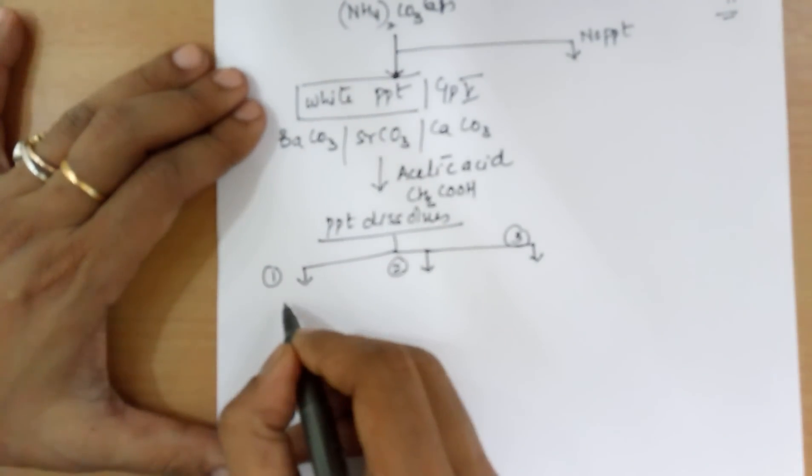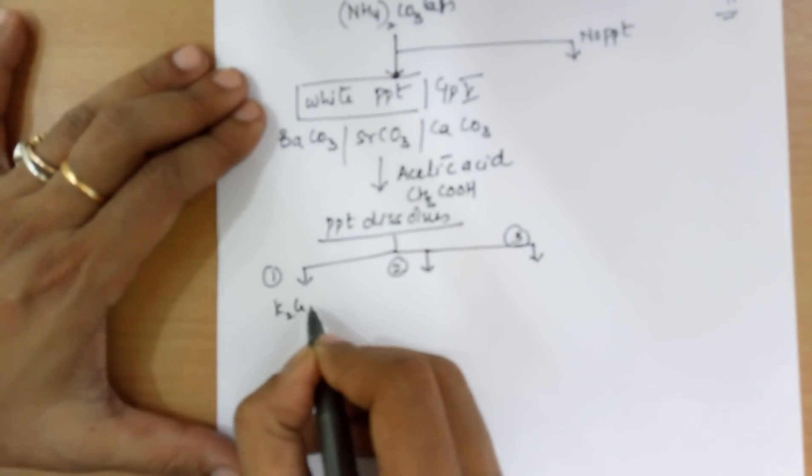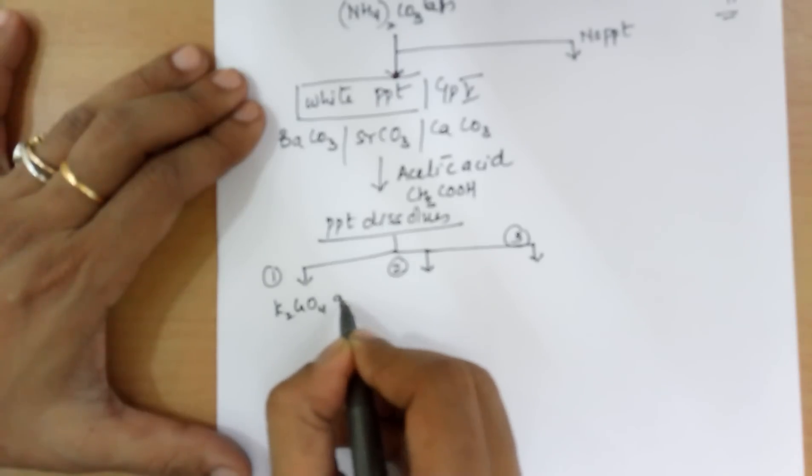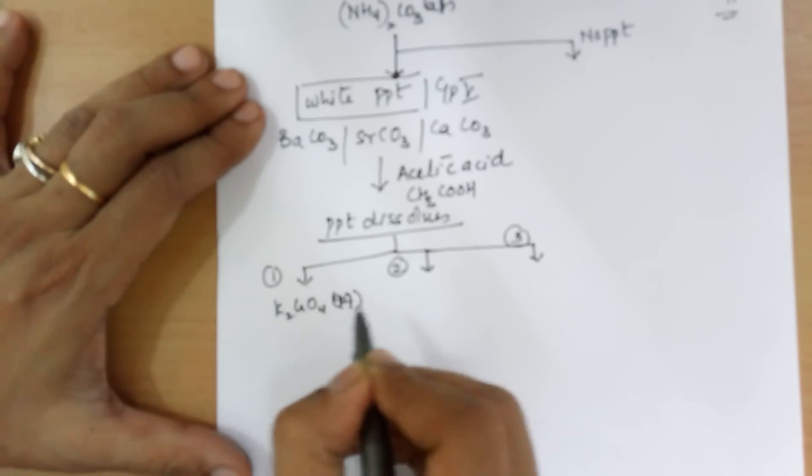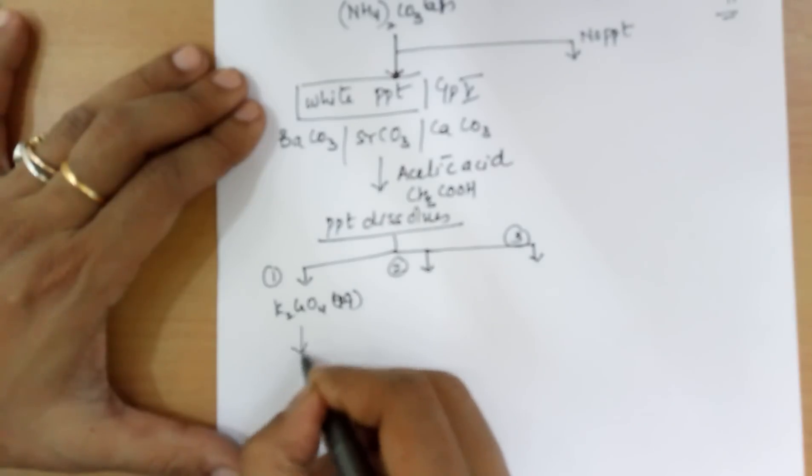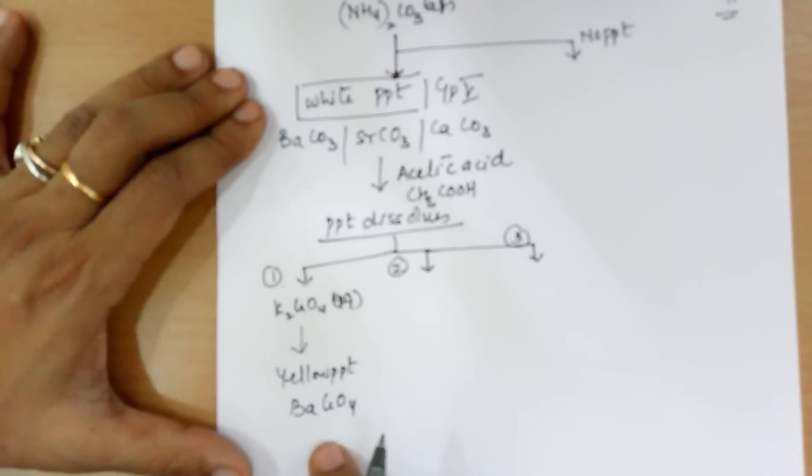To the first part, add K2CrO4 aqueous solution, which is a yellow colored solution. You will end up in a yellow PPT, which is barium chromate. If you get this,